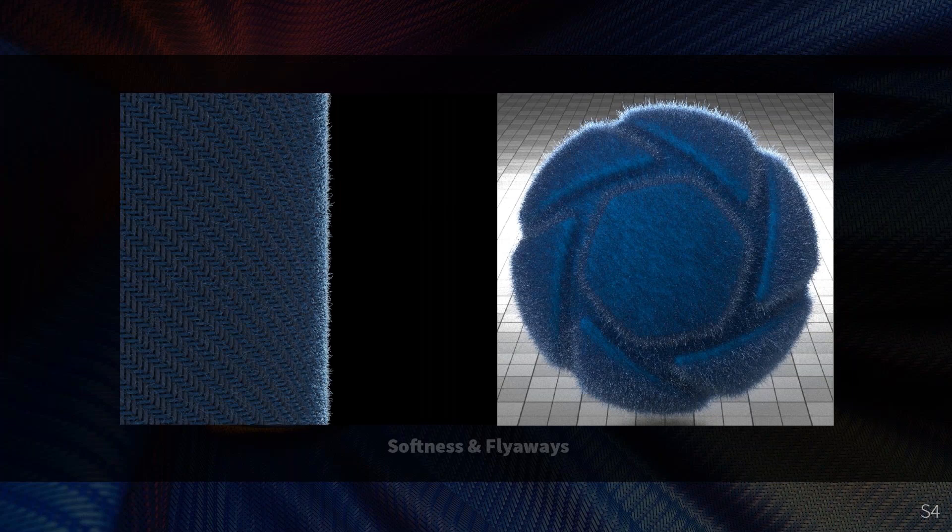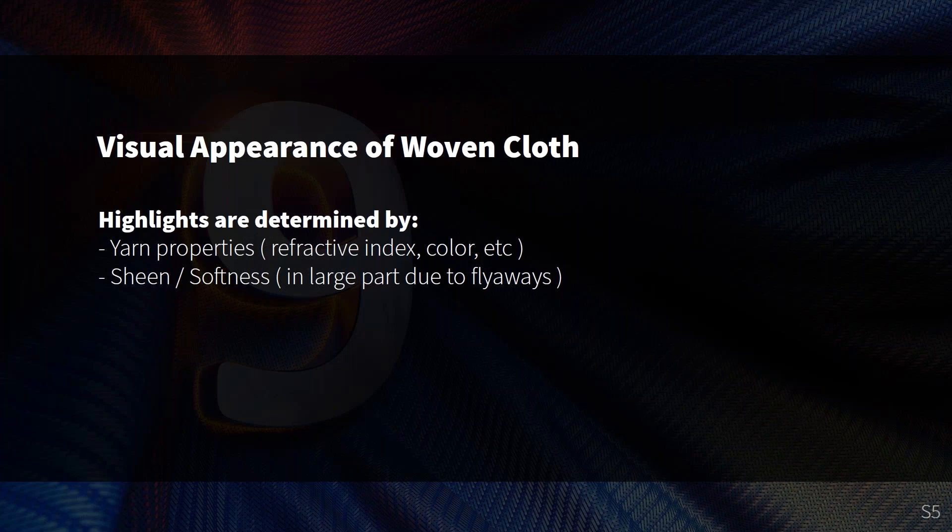And the next slide is just a quick summary. It's important to keep in mind when you play with real cloth that the yarn properties and the shape of the yarn are extremely important for the appearance when you look at it from far away. So don't shy away from playing with the weave pattern editor and trying different levels of tension and size and types of yarn when you play with real cloth. And finally, the sheen or the flyaway fibers are very important to get this feel of the softness that you get from many fabrics.